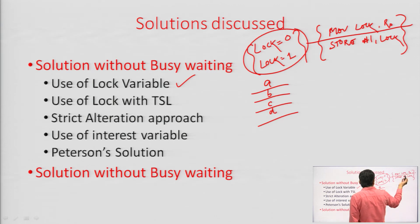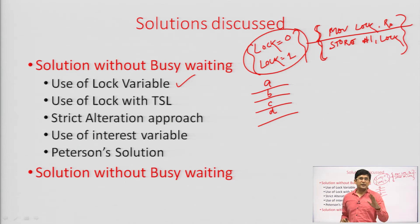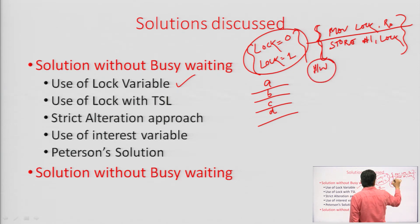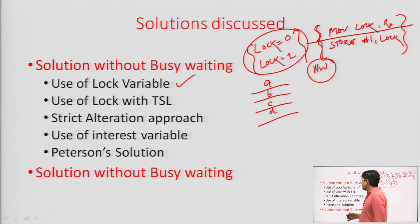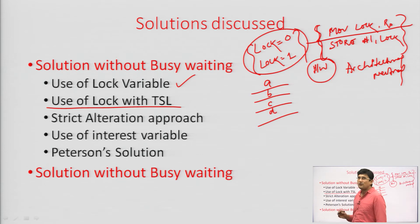Since mutual exclusion cannot be achieved with software alone when two statements must run atomically, this has to be a hardware solution. A hardware solution can combine or fabricate these two statements in a chip, but the solution may not be architecturally neutral. This approach is called the use of Test-Set-Lock (TSL). Another approach is the strict alteration approach, using a turn variable initialized to 0. When turn is 0, process 0 can enter the critical section; on exit, it sets turn to 1, allowing process 1 to enter, and so on.